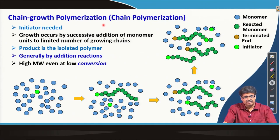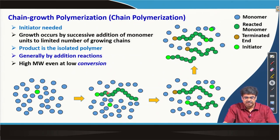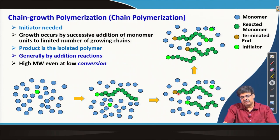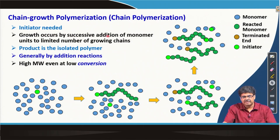If you recall our discussion from lecture 4 or 5 about chain growth polymerization: we discussed that if we have a set of monomers and an initiator, the initiator initiates the chain, and once the chain initiates we have monomers getting added one after another at the end, making the polymer chain. More and more such chains generate, propagating chains eventually get terminated, and we get a polymer sample.